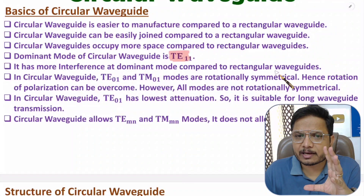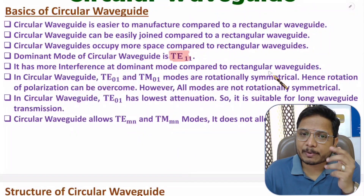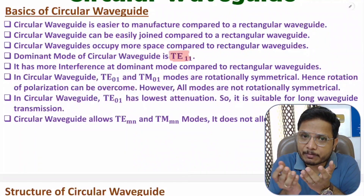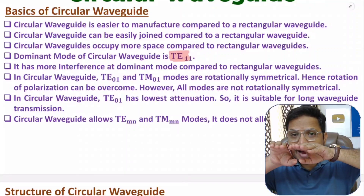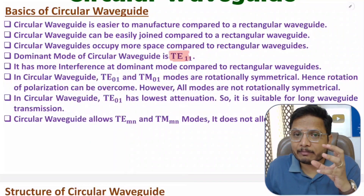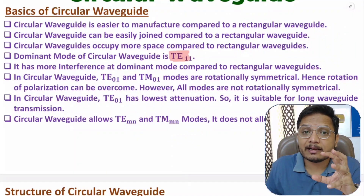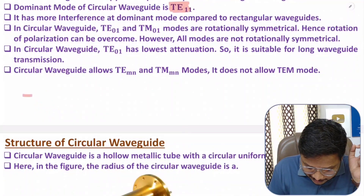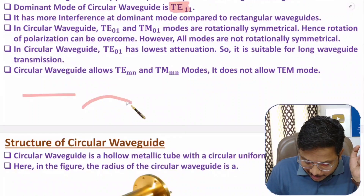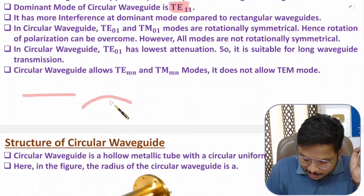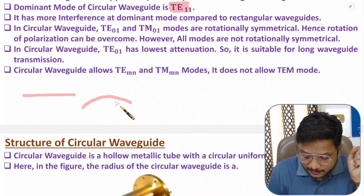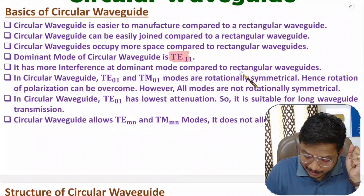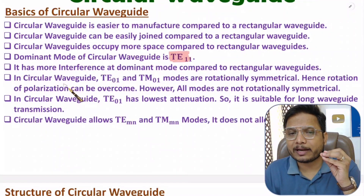With rectangular waveguide, interference at TE10 mode is very less compared to circular waveguide. The interference in circular waveguide happens because of its fabrication — when you bend the metal into a circular shape, tapering issues generate dispersion. If you have a flat surface and bend it into a circular shape, there will be more dispersion when the signal reflects from the surface.